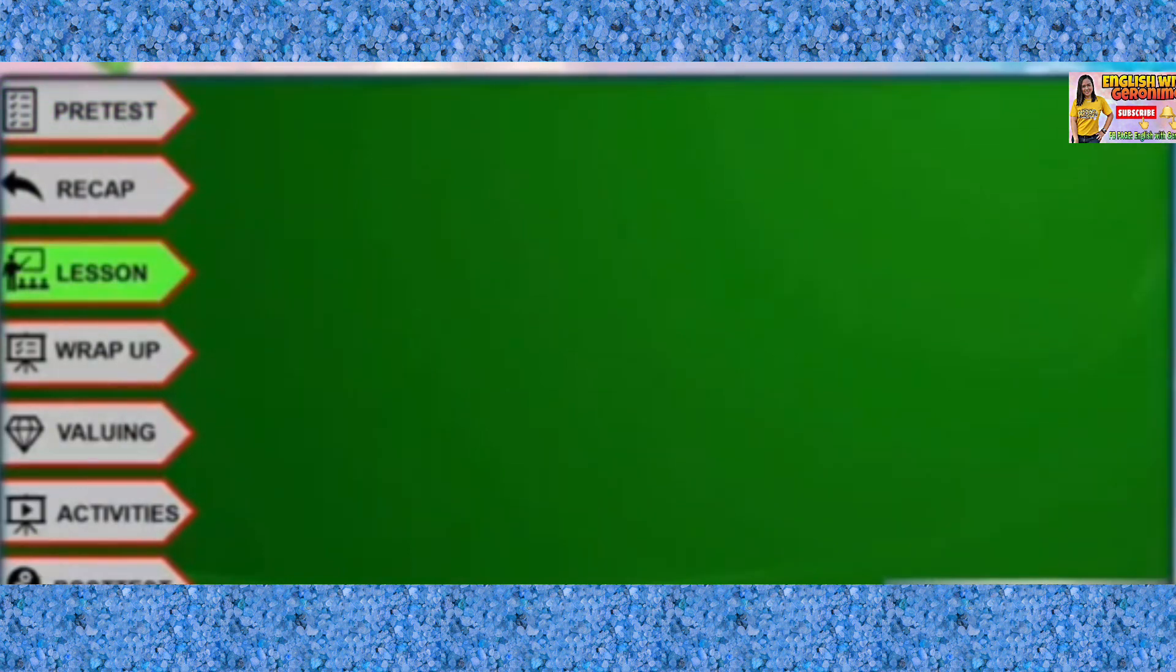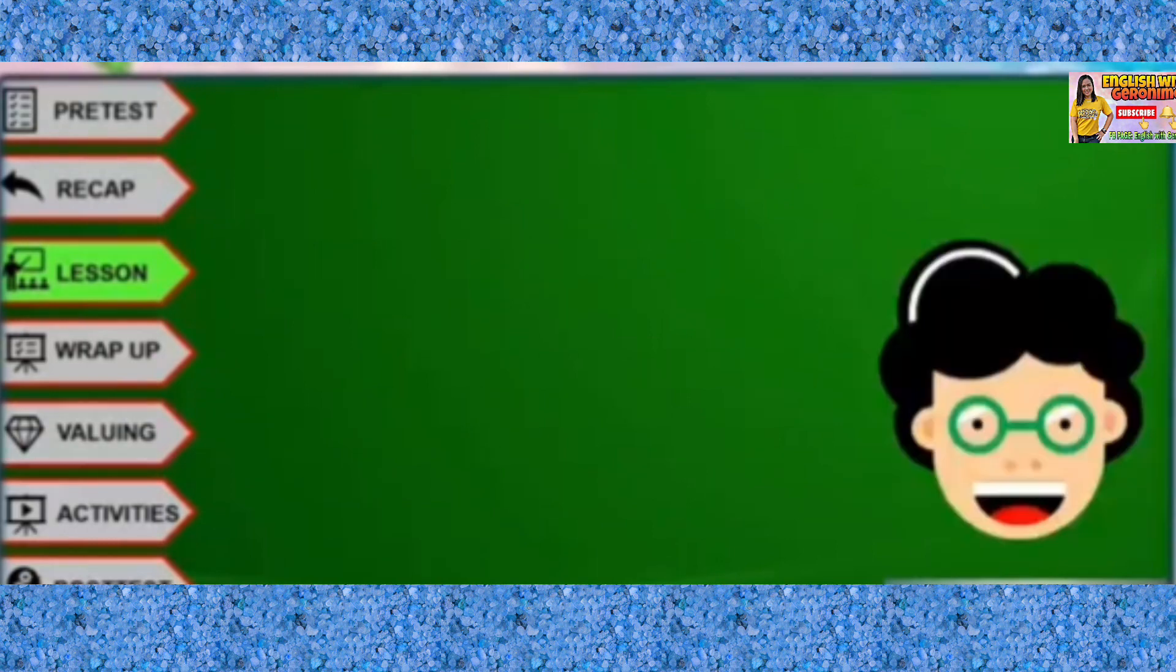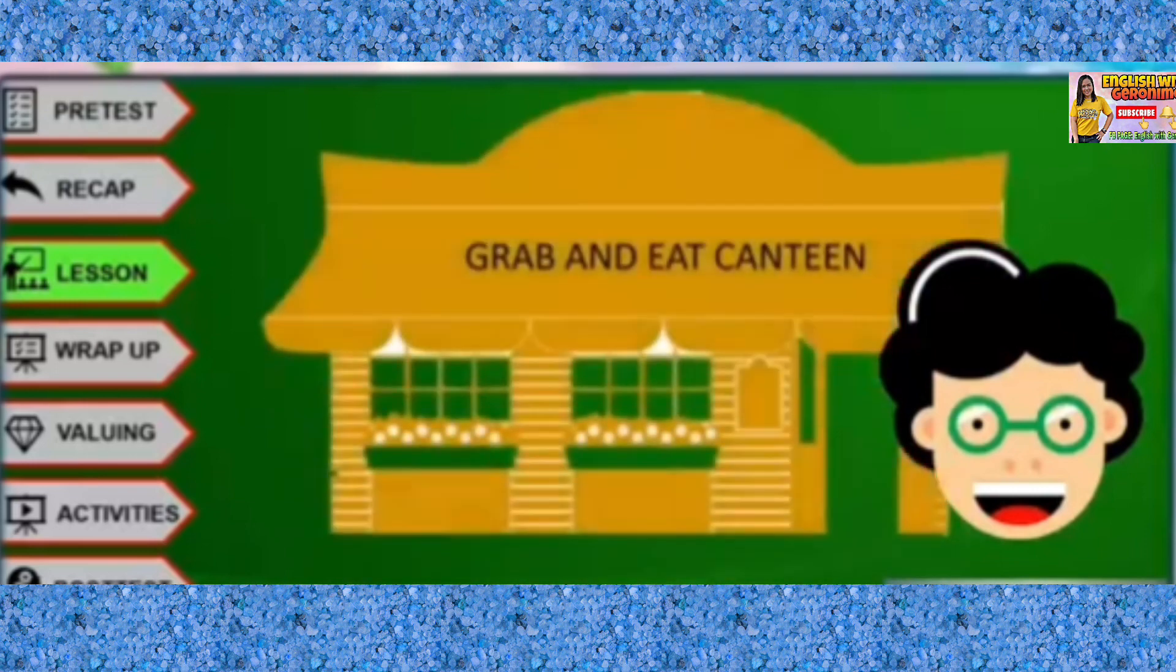Let's have our lesson for today. Alma, one of the owners of Grab and Eat Canteen, found out that there is an increase of 2,000 in their profit last February and a decrease of 6,000 at the end of March because of the enhanced community quarantine.